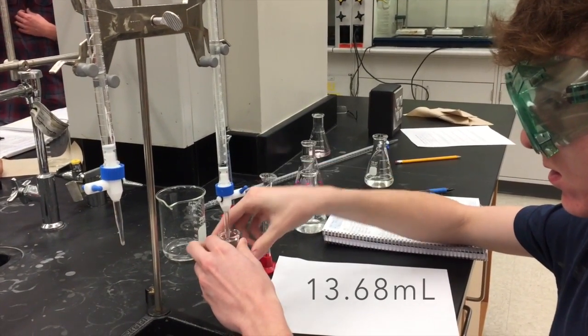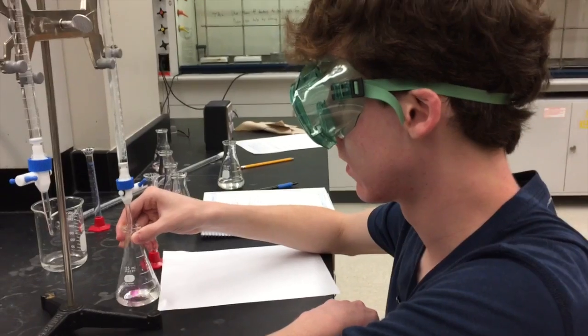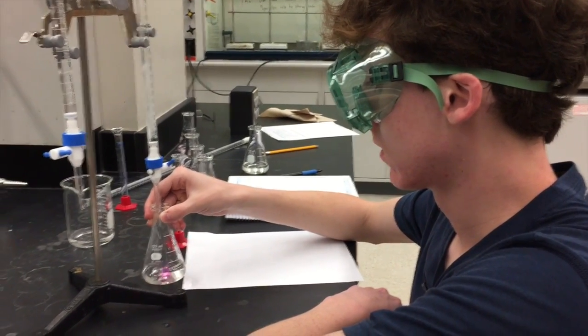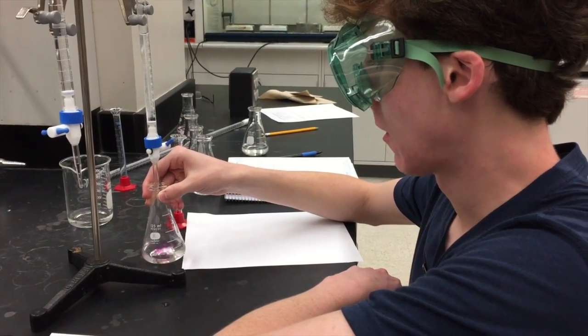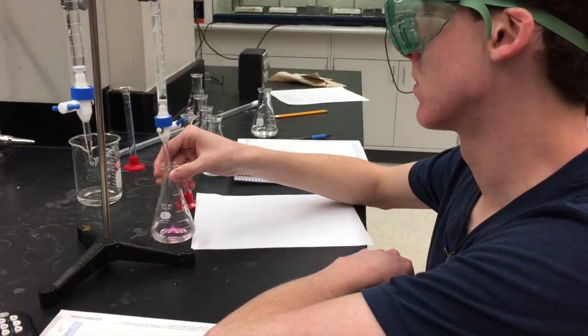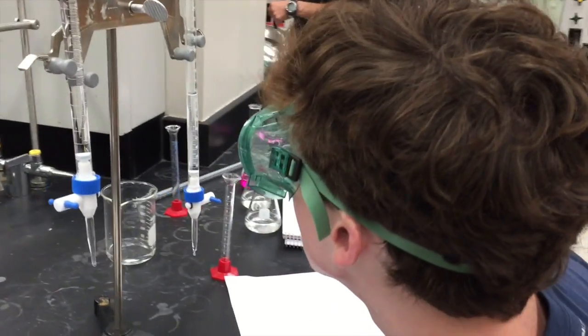Open the stopcock to allow sodium hydroxide to flow out and swirl the Erlenmeyer flask to allow the reaction to occur more quickly. When the solution turns a little pink, slow down. The titration is finished at the endpoint where the solution becomes a light pink color. Record the final volume.